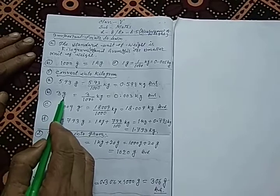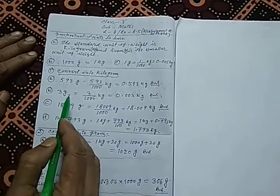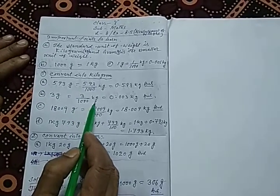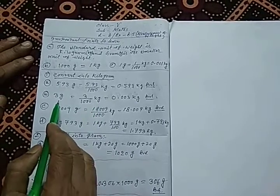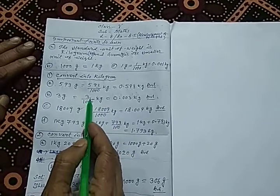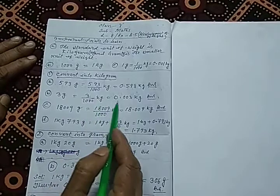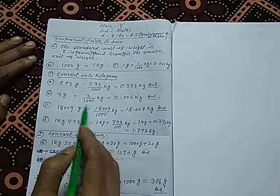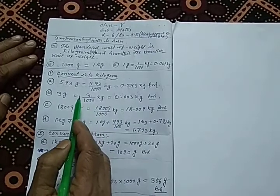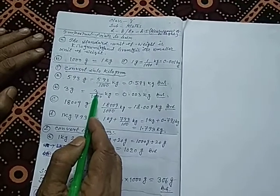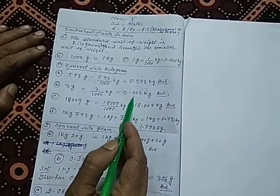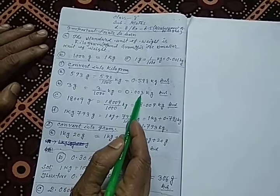In B, it is given 3 gram, to be converted into kg. So 3 is divided by 1000 kg. When gram is divided by 1000 it converts into kg. Since there is only one digit, we take two zeros from outside to make three digits. So we write 0.003 kg. In C, it is given 18,009 gram, to be converted into kg. So 18,009 divided by 1000 — the decimal point is placed after three digits from the right — giving 18.009 kg.